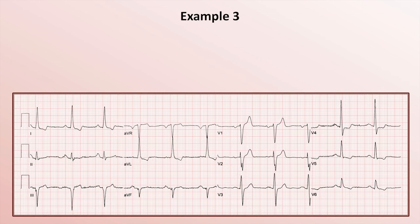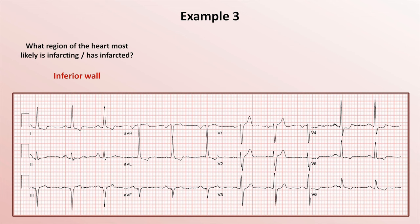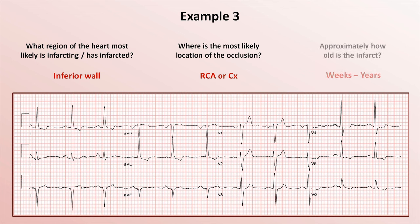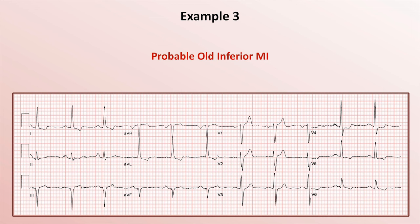In example 3, there are no ST elevations, but Q-waves are seen in 2, 3, and AVF, suggesting the infarct affected the inferior wall. Q-waves don't localize quite as well as ST elevations, so this is just a reasonable hypothesis. As with example 1, we can't say whether the inferior wall is supplied by the RCA or circumflex. With Q-waves present and no other ischemic changes, the infarct must be old — defined as anything from weeks to years. Summary: a probable old inferior infarct. The ST depressions and T-wave inversions in 1 and AVL are not reciprocal changes; they are likely a secondary repolarization abnormality due to left ventricular hypertrophy.